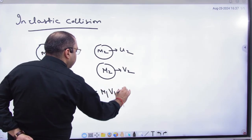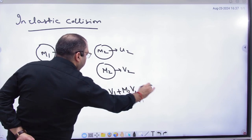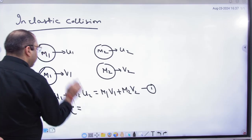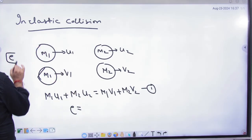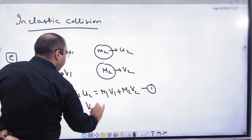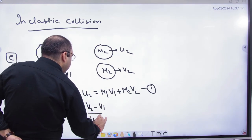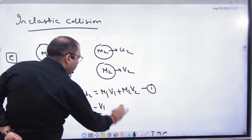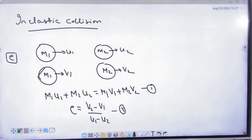M1U1 plus M2U2 equals M1V1 plus M2V2, equation number 1. And second, if restitution is given in the question, then e equals V2 minus V1 by U1 minus U2. By solving these, V1 and V2 can be calculated. This is the technique. There is no formula for this. Just apply two equations and calculate V1 and V2 yourself.